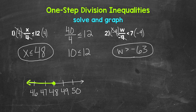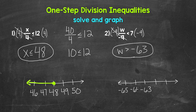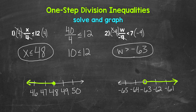We are ready to graph. Let's draw a number line with negative 63 in the middle and a couple of numbers on both sides: negative 65, negative 64, negative 63, negative 62, negative 61. W is greater than negative 63, so negative 63 is not included — it's not a solution. So we need an open circle at negative 63, then an arrow going right towards everything greater than negative 63. The open circle shows negative 63 is not included, and the arrow going right represents all values greater than negative 63. That's our graph.